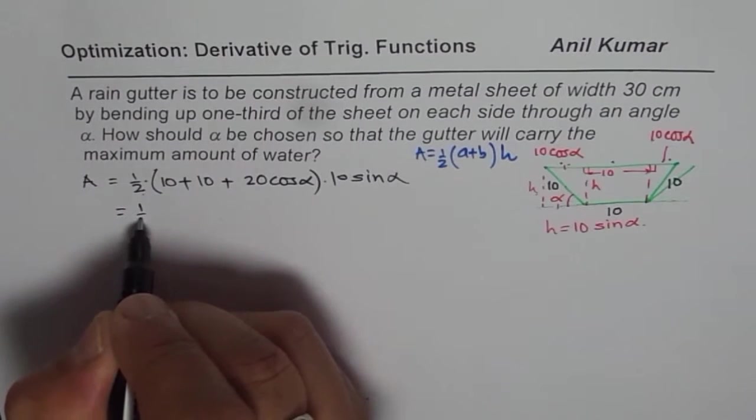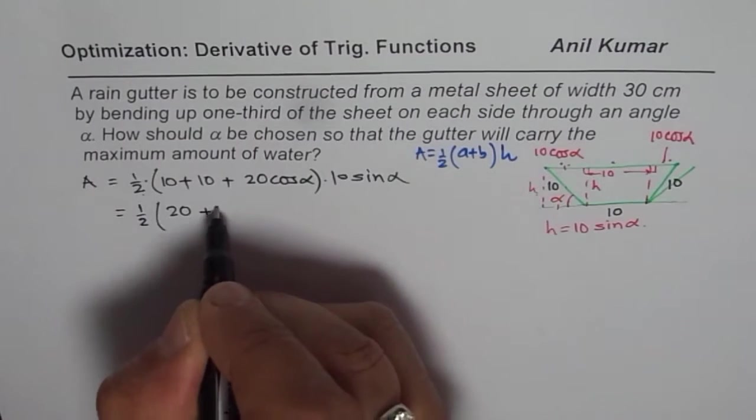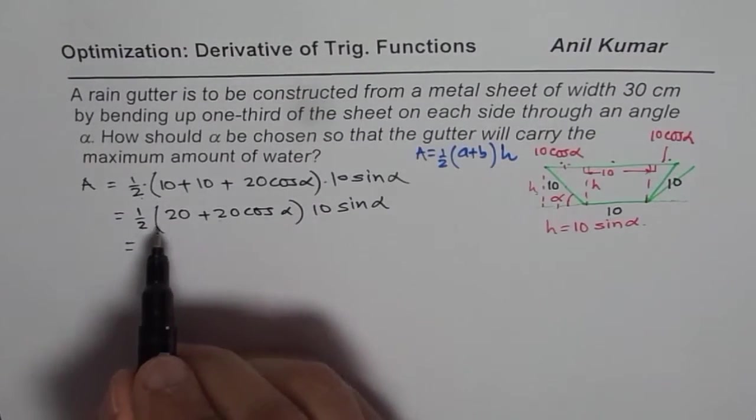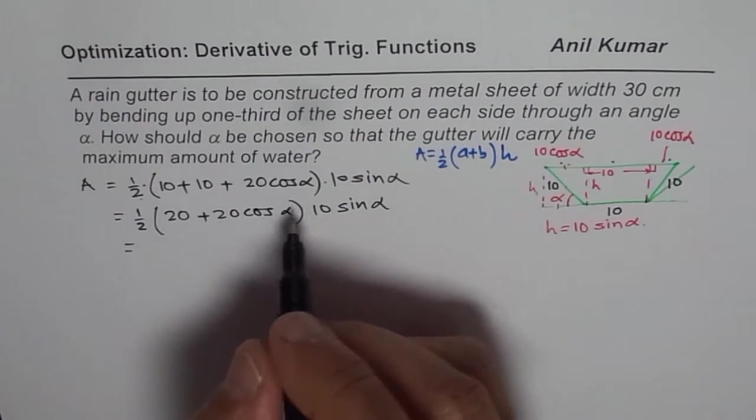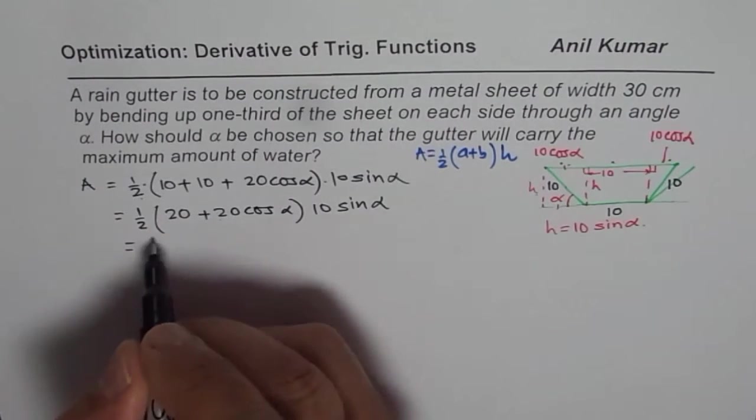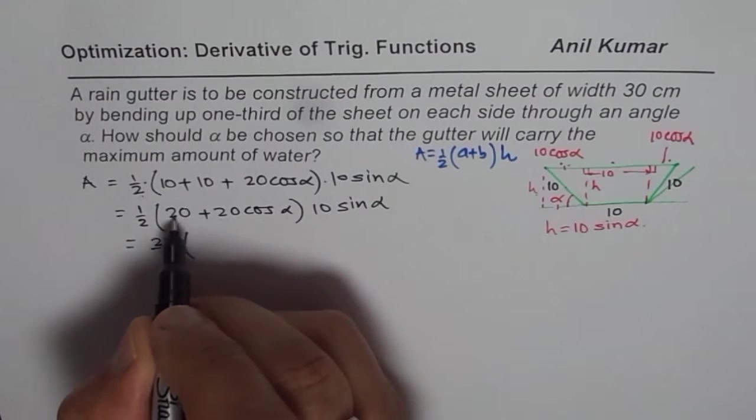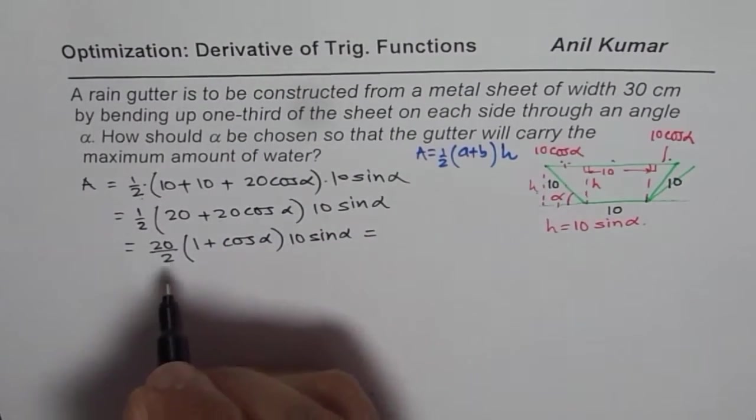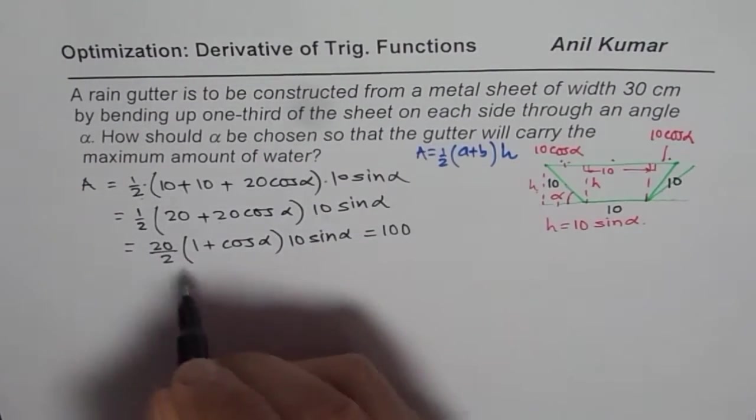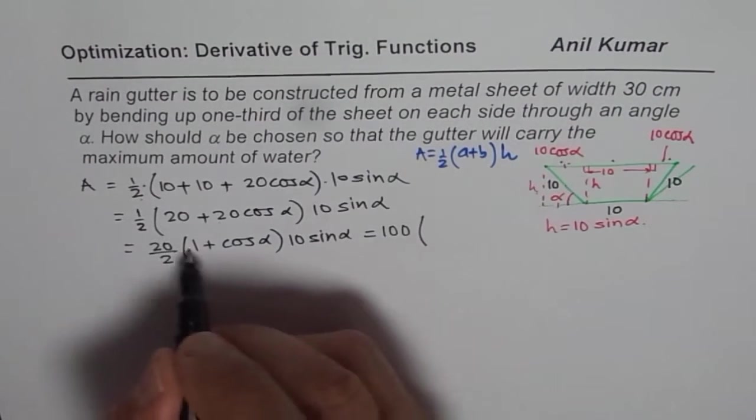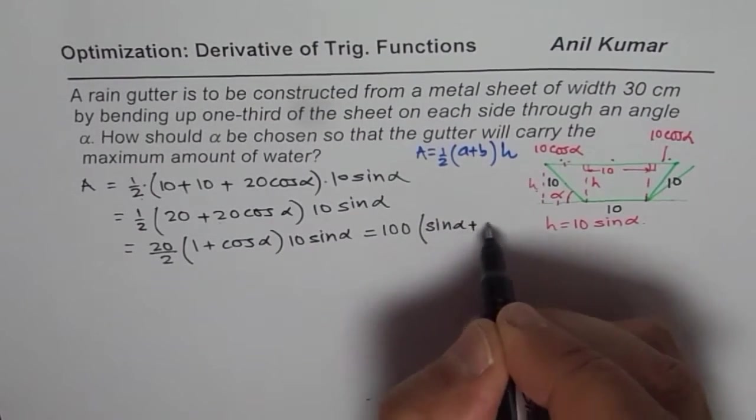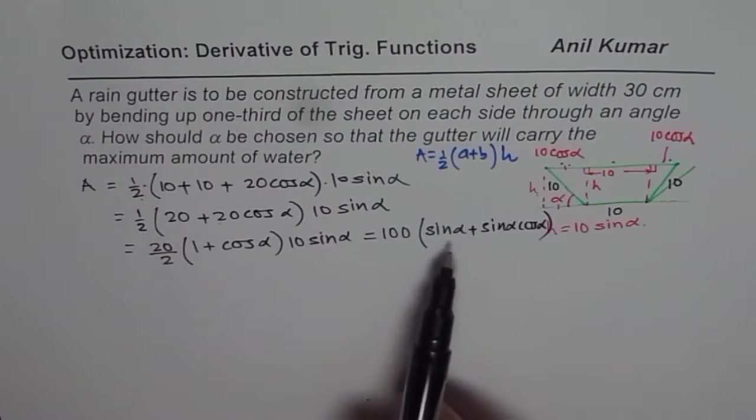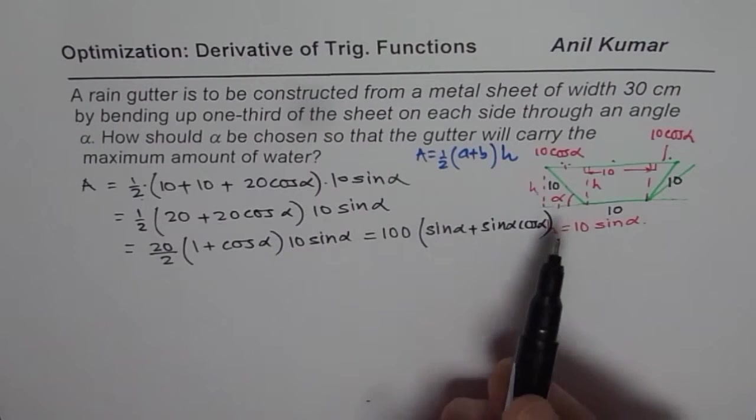Area of a trapezoid is half of sum of these two parallel sides. So sum of these two sides means 10 plus 10 cos alpha plus 10 cos alpha, which is 10 plus 20 cos alpha, times the height 10 sin alpha. Simplifying, we get A = 100 times sin alpha plus sin alpha cos alpha.